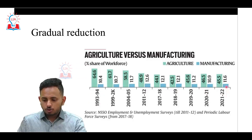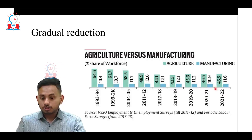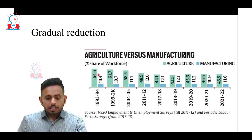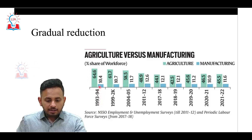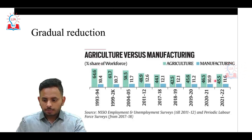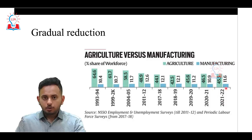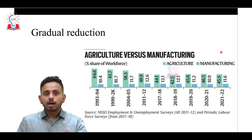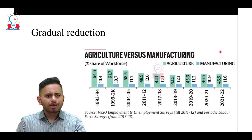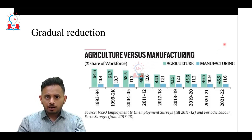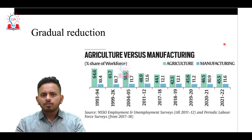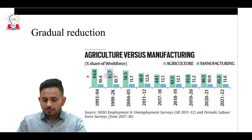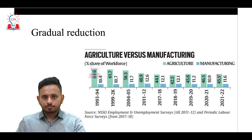Looking at the historical data, in 1993–94, 64.6% of the Indian population were dependent on agriculture, whereas in 2021–22 it has reduced to 45.5%. This means almost 20% of the Indian population shifted from agriculture to allied activities or manufacturing — they left agriculture and started working in other sectors of the economy.